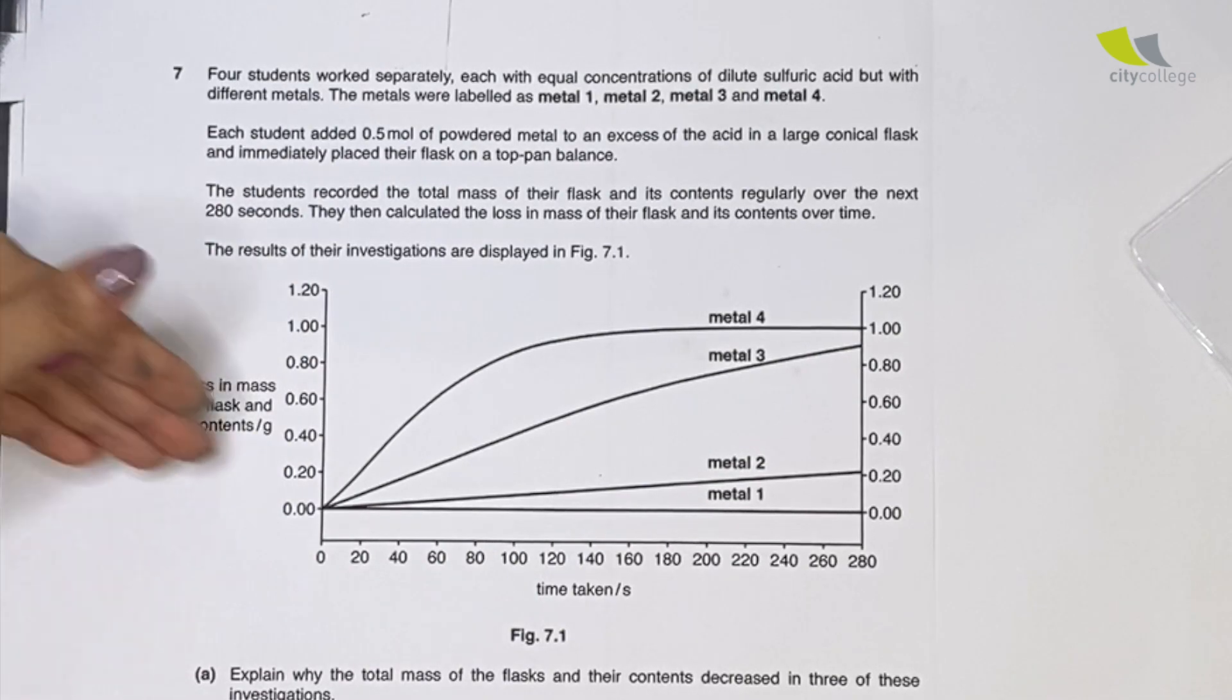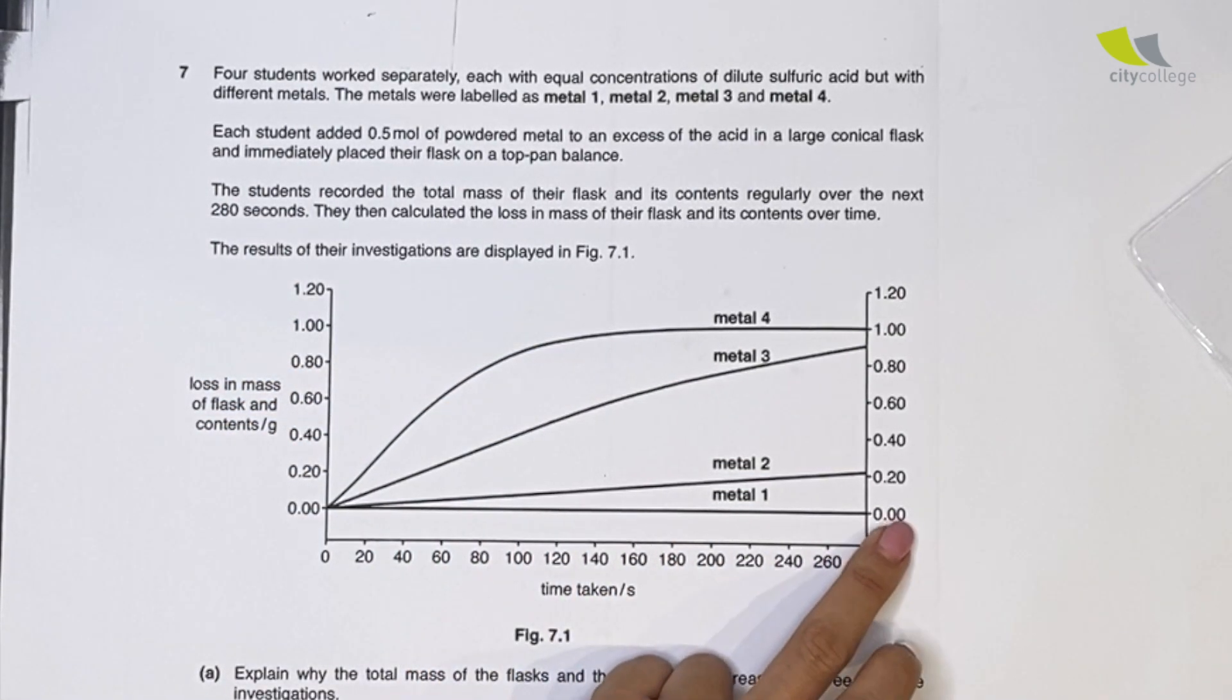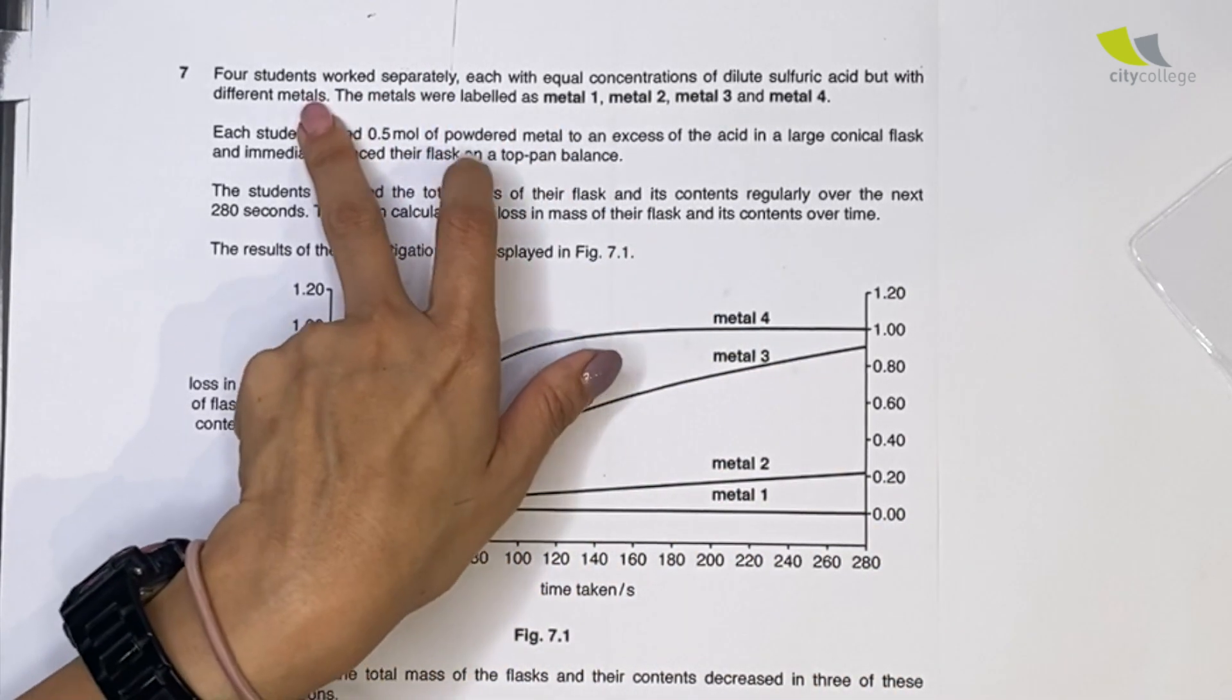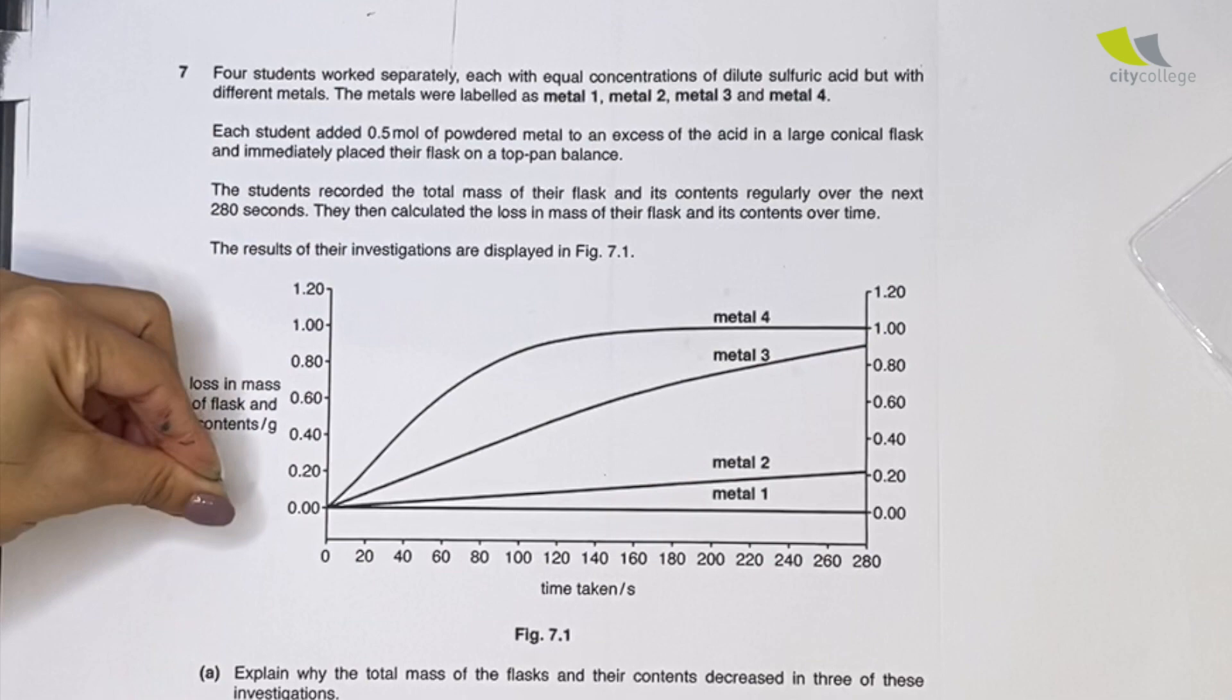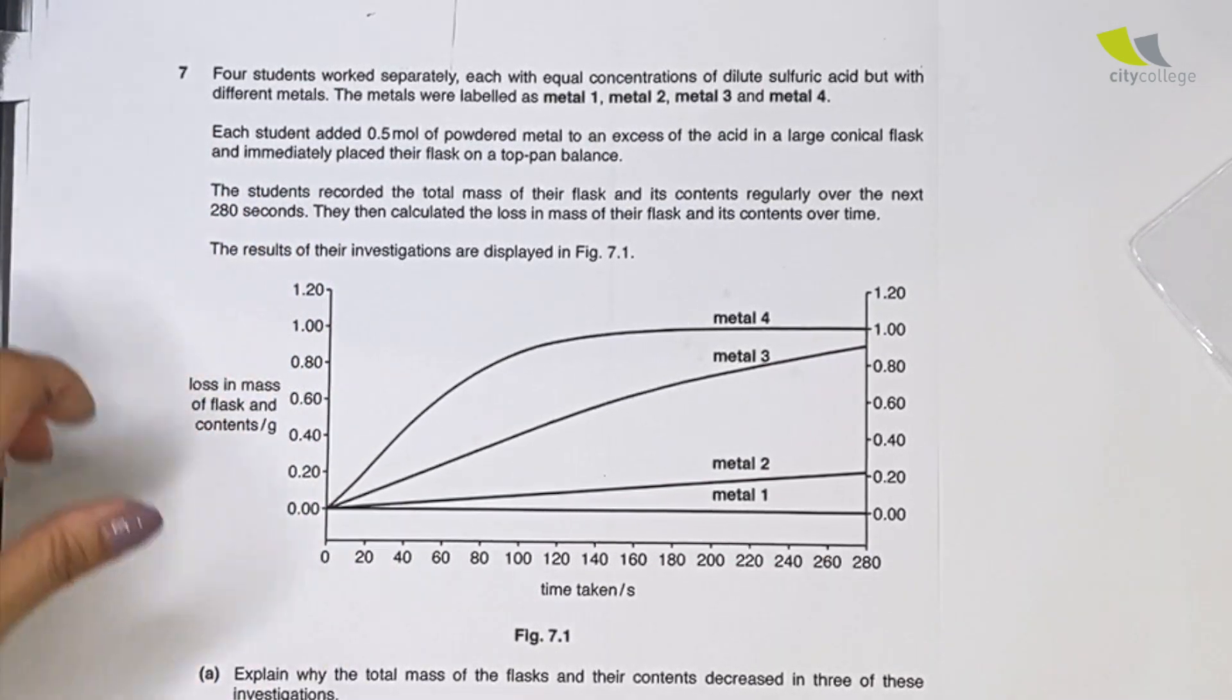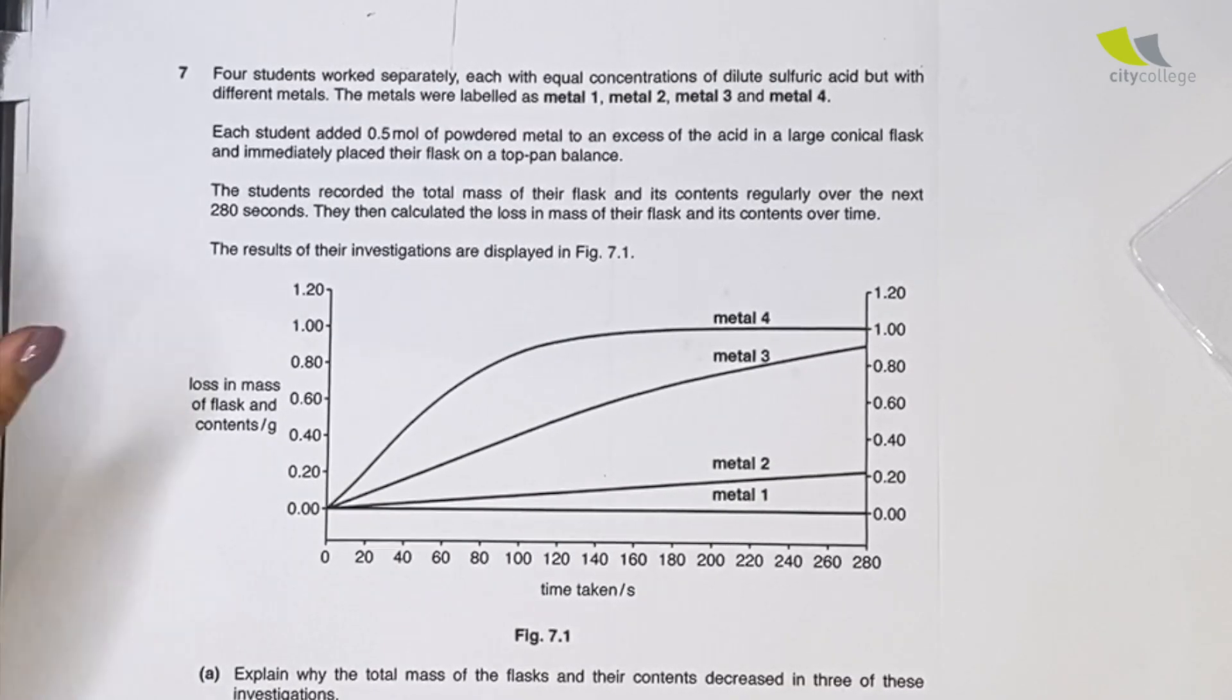Now you notice that for metal 1 there is no loss in mass. It also shows that there's no escape of gas. Whenever a metal reacts with an acid, the gas that's evolved is hydrogen gas. So if there is no loss in mass, means that there's no hydrogen gas evolved. If there's no hydrogen gas evolved, it also means there's no chemical reaction.